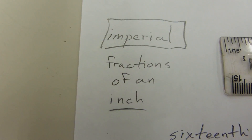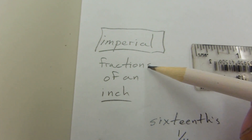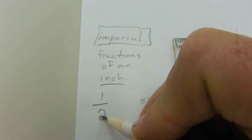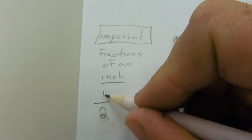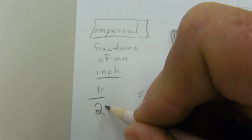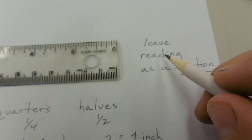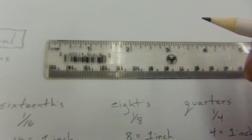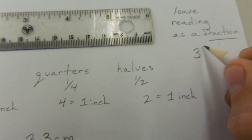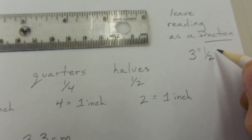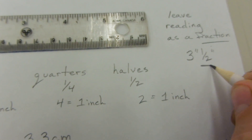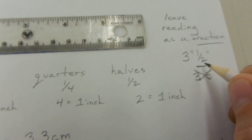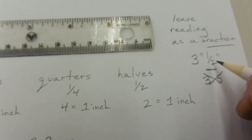Now, imperial measurement. This is a little harder because we're dealing with fractions of an inch. In a fraction we have a numerator and a denominator, and when it comes to our answer we're going to leave our reading as a fraction. So for example, maybe my answer is 3 inches and another half inch — I'm not going to write this as 3.5. I'm going to leave it as a fraction.